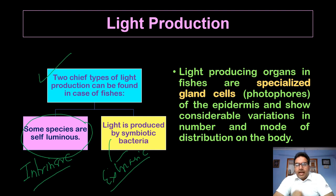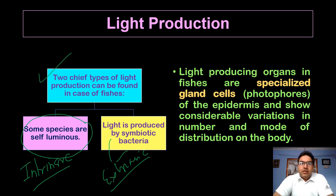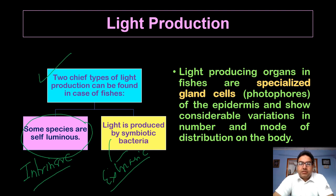Light-producing organs in fishes are specialized glands called photophores in the case of fishes with intrinsic bioluminescence. These specialized glands of the epidermis show considerable variation in number and mode of distribution on the body.